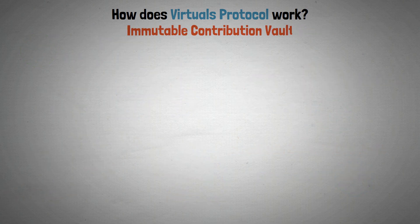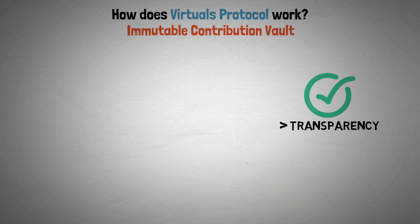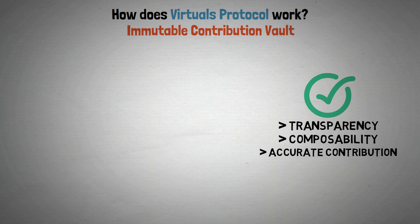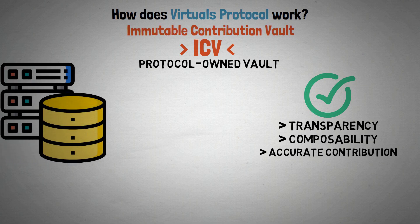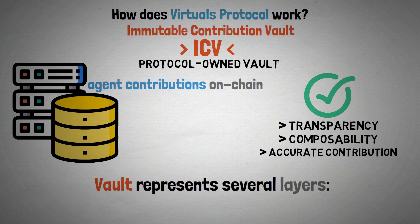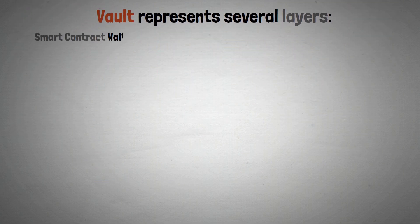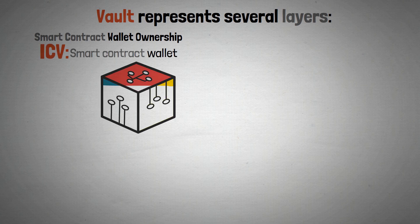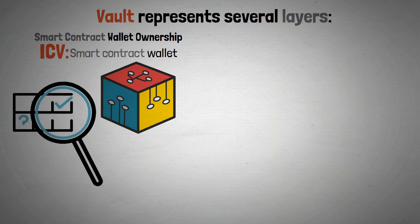The Immutable Contribution Vault (ICV) guarantees transparency, composability, and accurate contribution attribution. The ICV is a protocol-owned vault that stores all authorized agent contributions on-chain. The vault represents several layers. At its foundation is a smart contract wallet — the ICV serves as this foundational layer and controls all other layers.